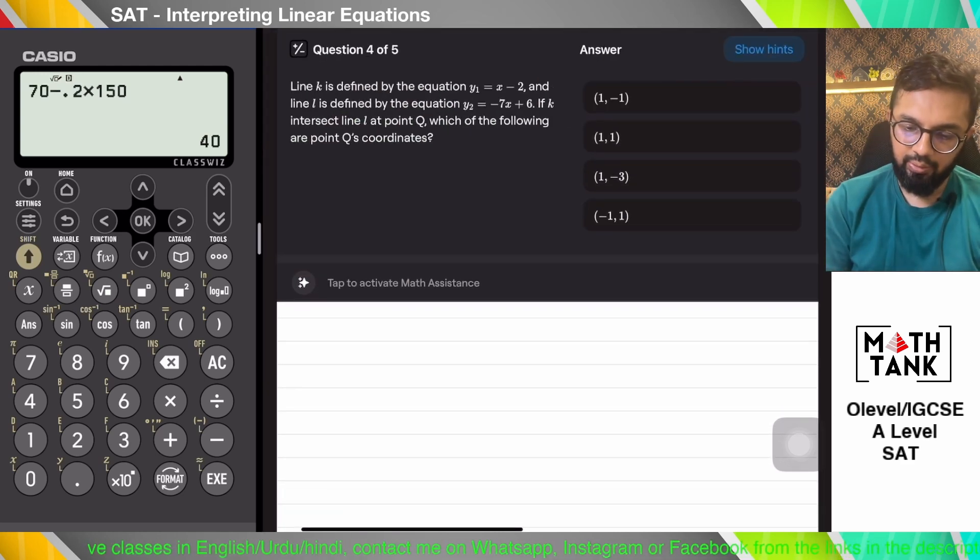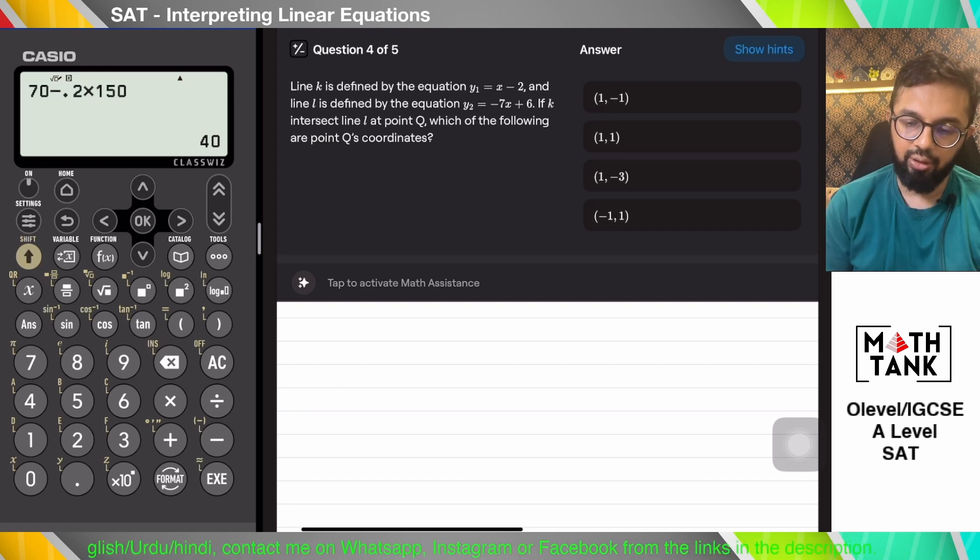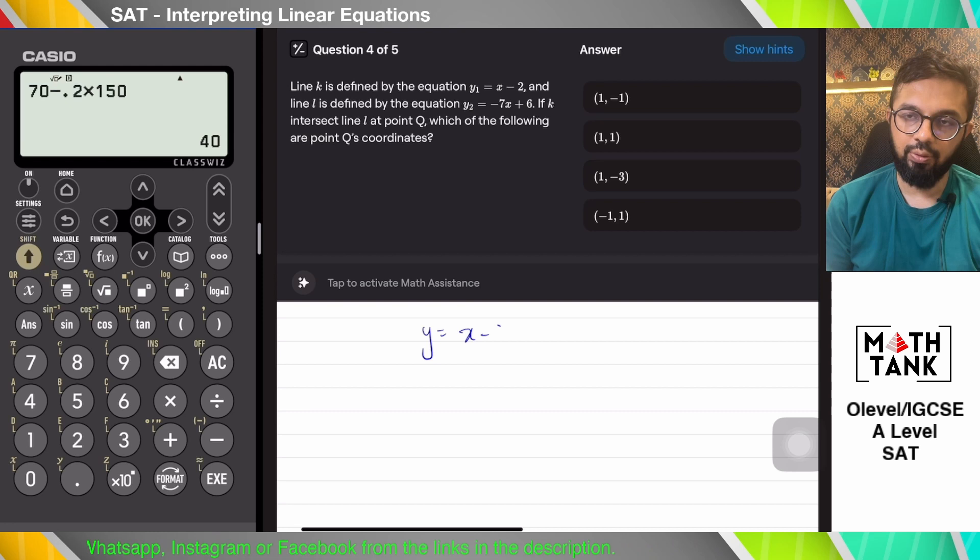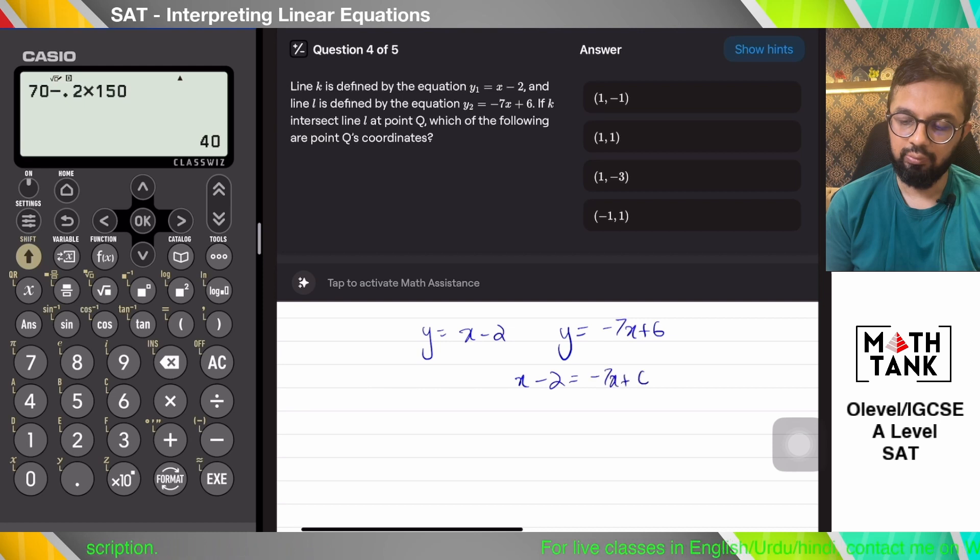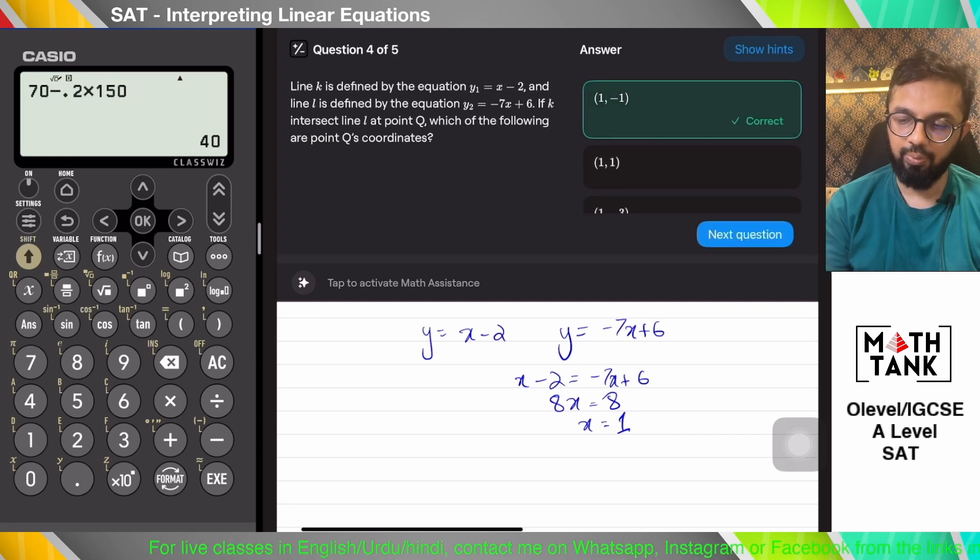Line K intersects line L at point Q. Which of the following? Whenever you have intersection points, you solve simultaneously. So x equals 1 and y equals minus 1.